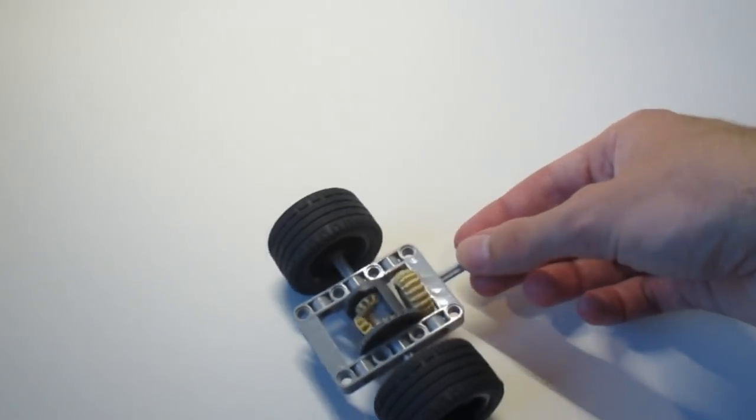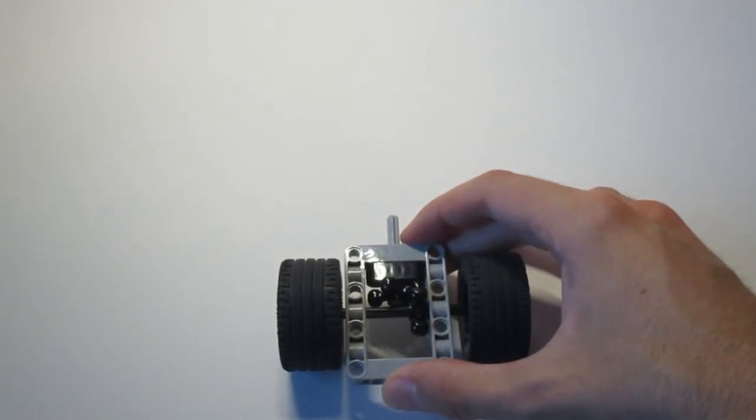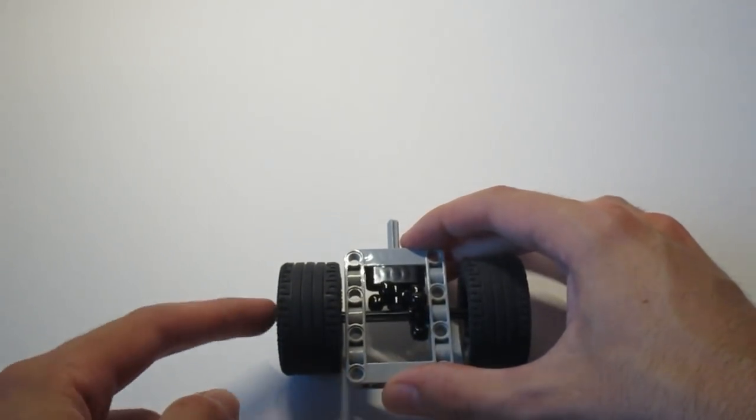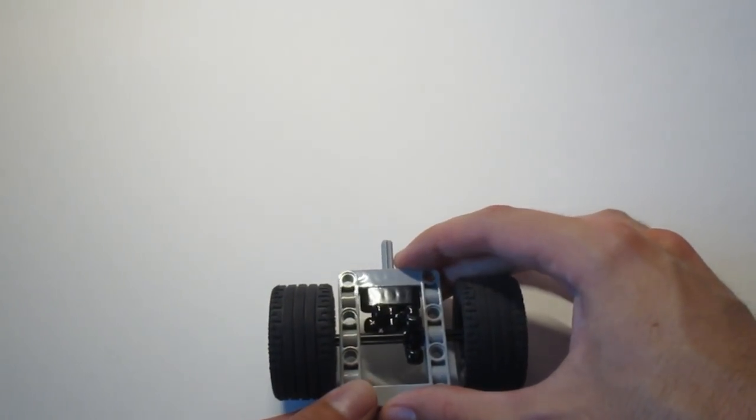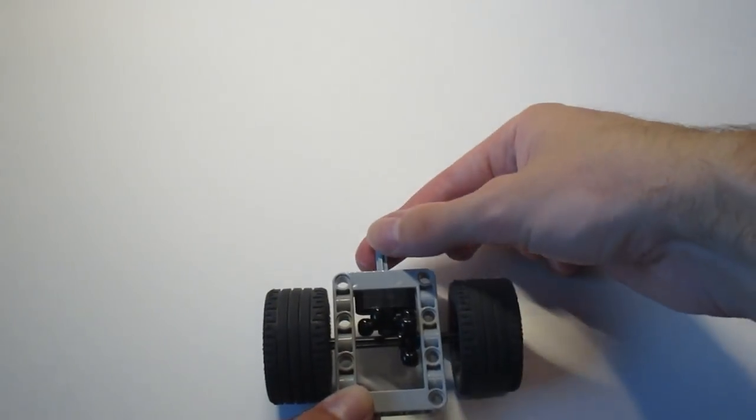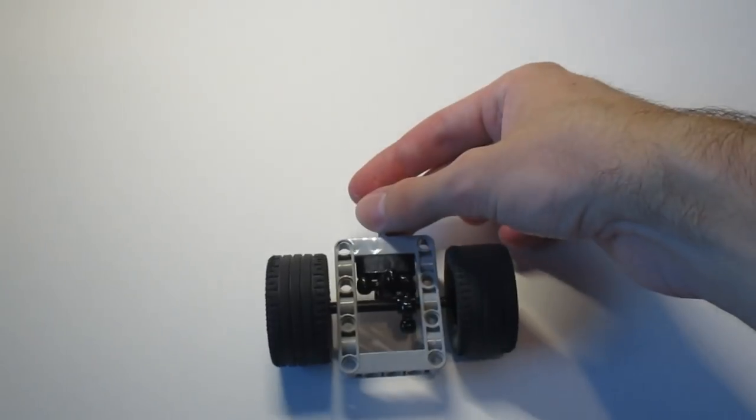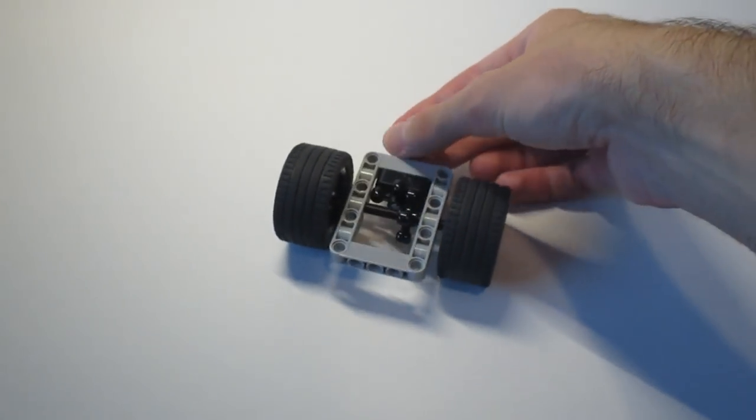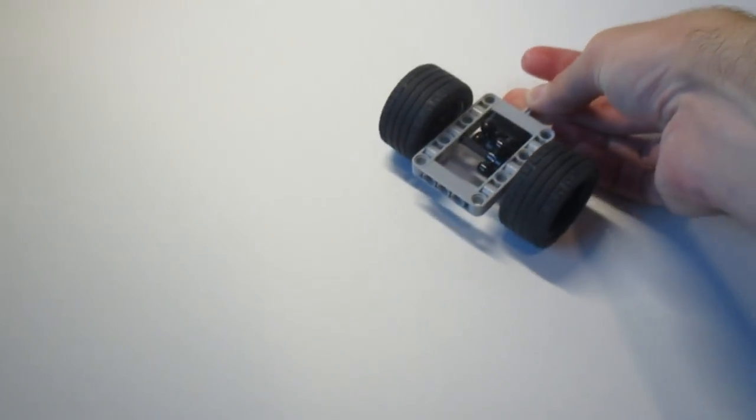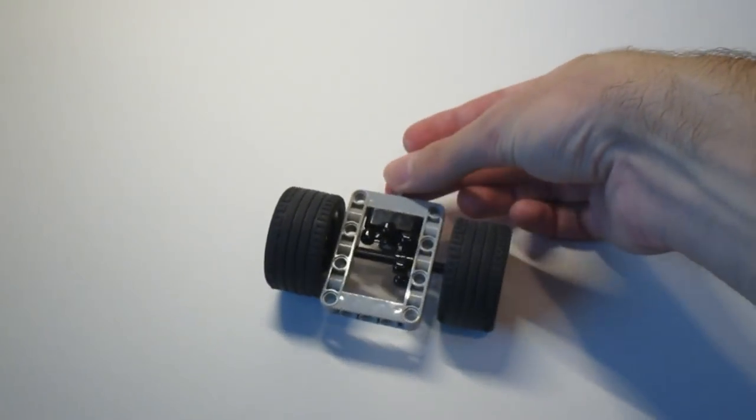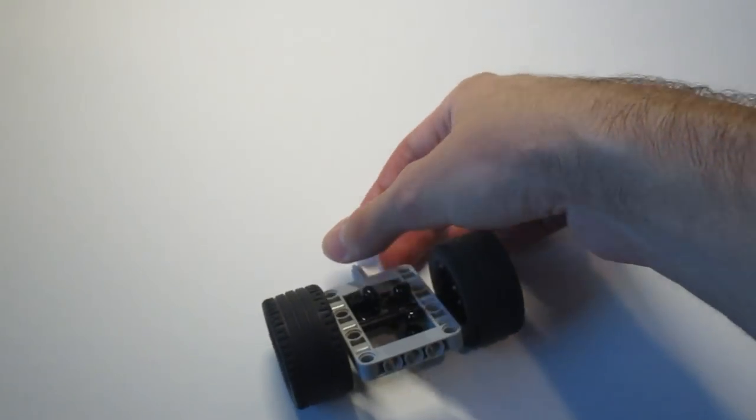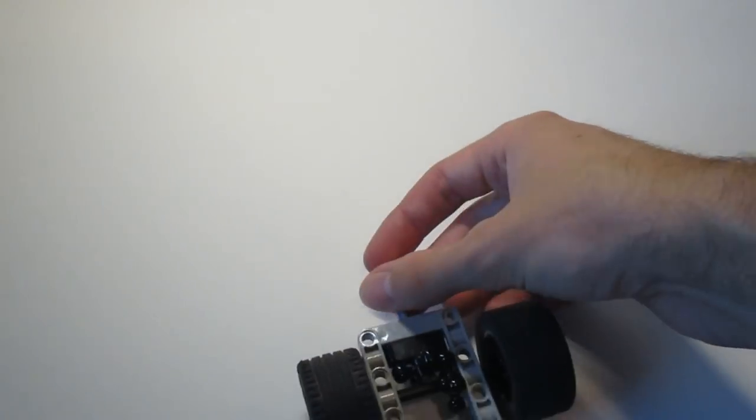By contrast, a solid axle, which I'm showing here, always forces both wheels to have the same amount of torque and spin at the same rotation speed. So as you can see, as I turn this to make it go forward and try to go around the turn, it's naturally going to resist turning. It's not nearly as smooth as the differential, which allows for much easier turning.